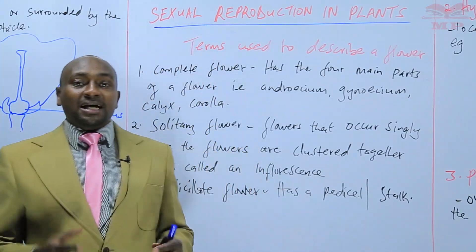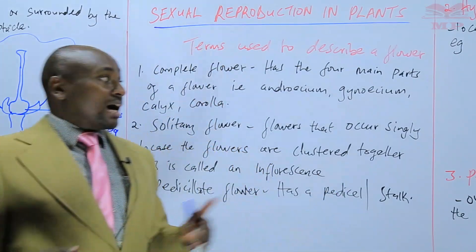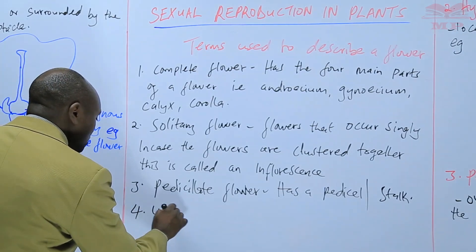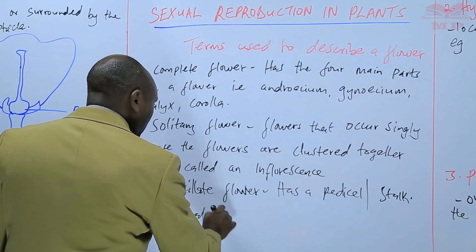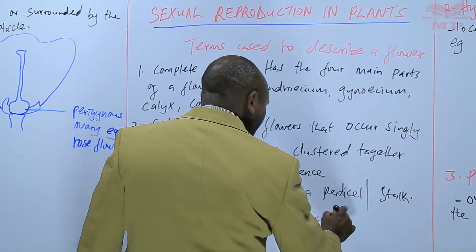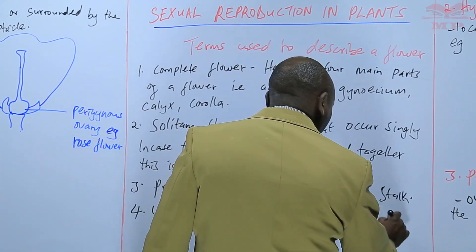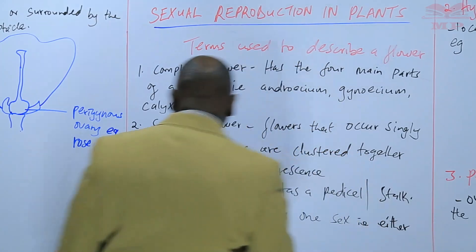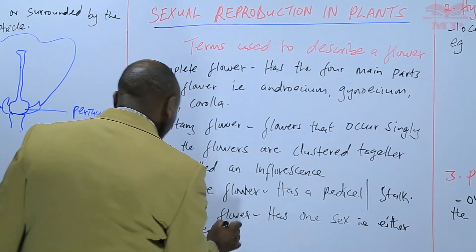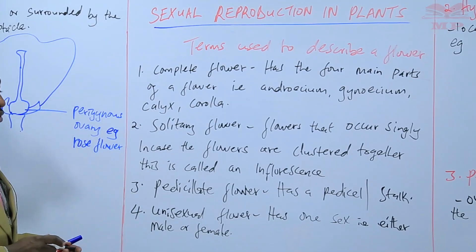So if the flower is bisexual, meaning that it has both sexes, but we have another one that is unisexual. If the flower is unisexual, this one has one sex — that is either the male or female reproductive system. For example, papaya — we say that is a unisexual kind of flower.